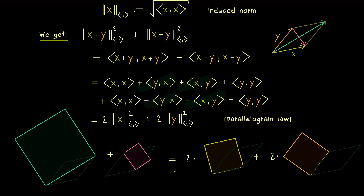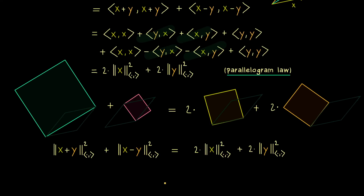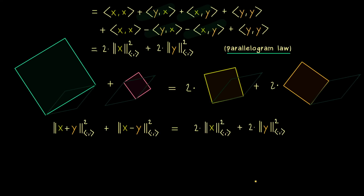Moreover, this relation is true no matter which Hilbert space or inner product space we choose. However, you should immediately note that in the statement of this parallelogram law, the inner product is not used at all — we just need the norm. And exactly this leads to a natural question: can the parallelogram law also be satisfied in a general norm space? It's not hard to see that in a general context we cannot always have that, but maybe there are some special norm spaces that satisfy this parallelogram law.